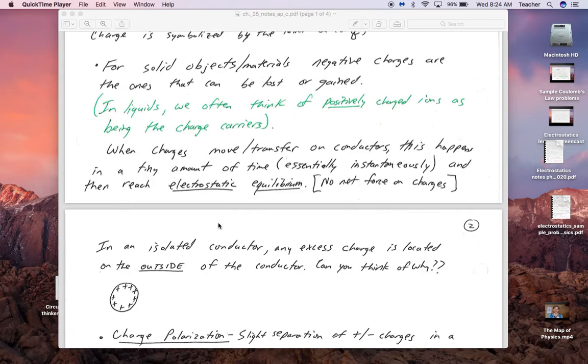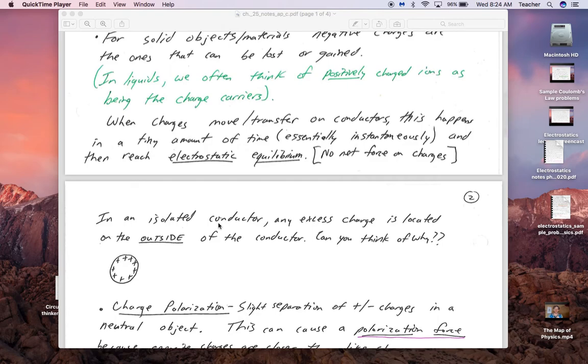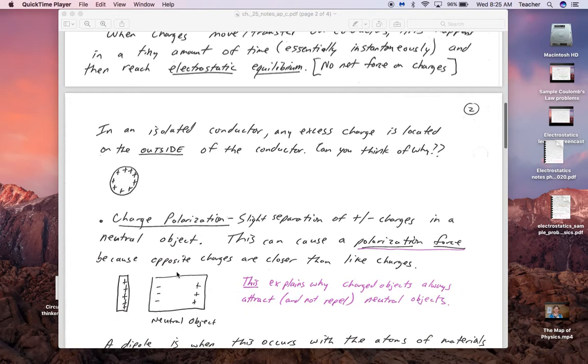When charges move or transfer on conductors, this happens in essentially no time. It's instantaneous, basically not exactly but basically, and then they reach instant or electrostatic equilibrium. That means where there is no net force caused by the position of those charges.